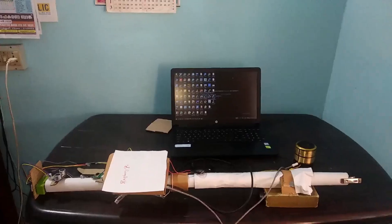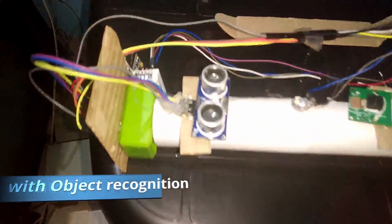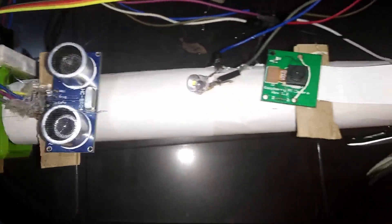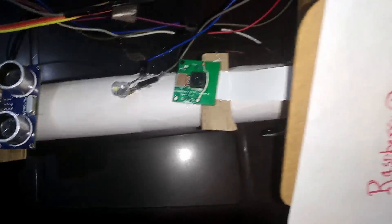Hey guys, this is Sijo Joseph from The Electrical Coder with another interesting project: a smart blind stick using IT recognition. As you can see, the ultrasonic sensor, camera, and LED are connected to the Raspberry Pi.